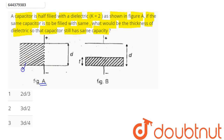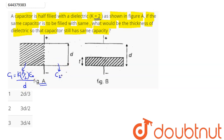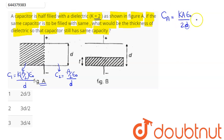Coming to figure A, we can say here C1 is given as k times (A/2) times ε₀ divided by distance d. Now k is given as 2, so 2 times (A/2) becomes A·ε₀/d. And C2 becomes equal to simply (A/2)·ε₀ divided by distance d.